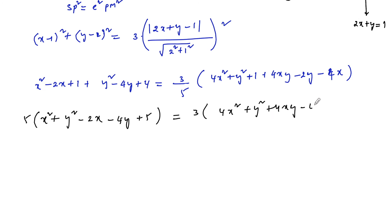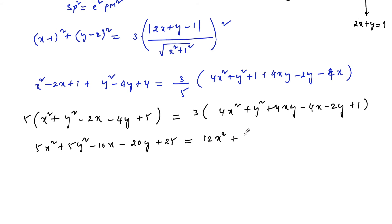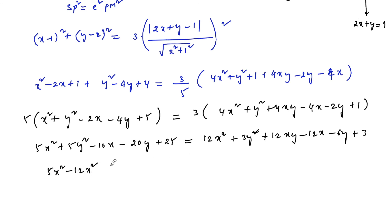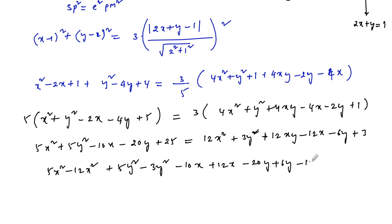So we write: 5x square plus 5y square minus 10x minus 20y plus 25, equal to 3 times (4x square plus y square plus 4xy minus 4x minus 2y plus 1), which gives 12x square plus 3y square plus 12xy minus 12x minus 6y plus 3. Rearranging: 5x square plus 5y square minus 10x plus 12x minus 20y plus 6y minus 12xy plus 25 minus 3.